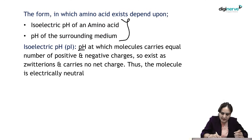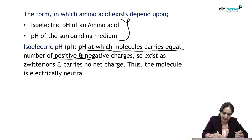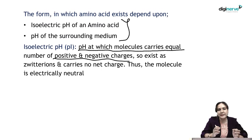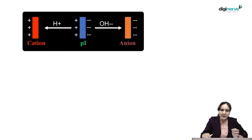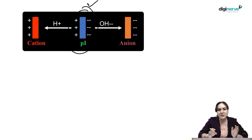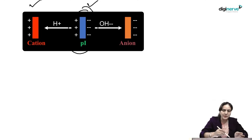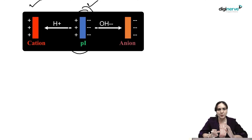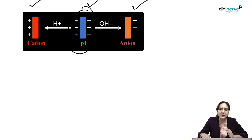Isoelectric pH is the pH at which molecules carry equal numbers of positive and negative charges, so that they exist as zwitterions and the net charge is zero. At low pH, the amino acid accepts a proton from the solution and becomes a cation; at high pH, it donates a proton and becomes an anion.